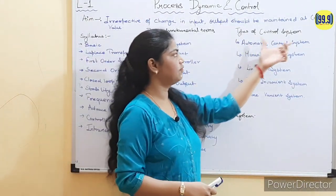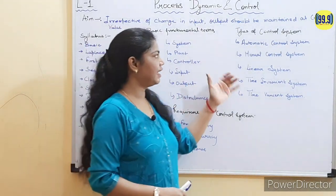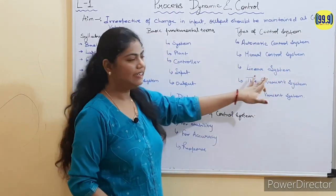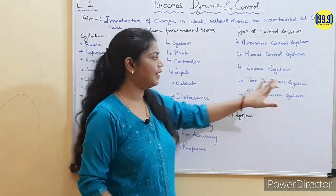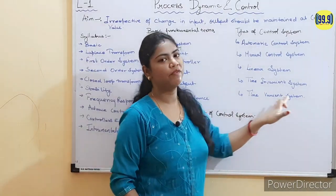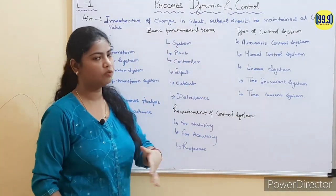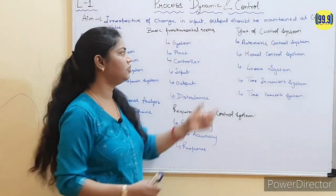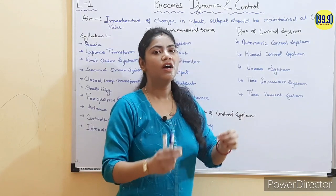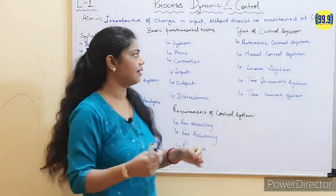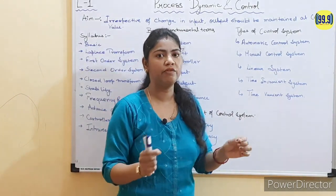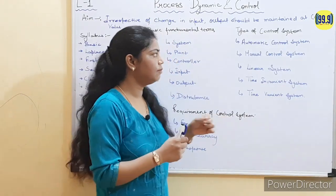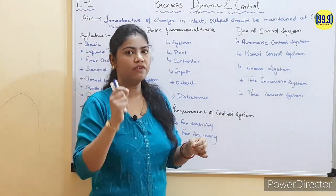Now let's come to the types of control systems. There are four or five types: automatic control system, manual control system, linear control system, time invariant system, and time variant system. In an automatic control system, the control system is self-regulatory — it does not require any type of human interference.